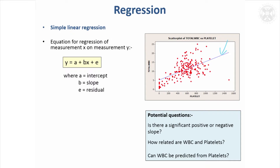Regression aims to minimize the distances of the data overall to that straight line. Without going into the details of how it's fitted, it comes up with what it thinks is the best straight line, and that line can be defined by an equation.